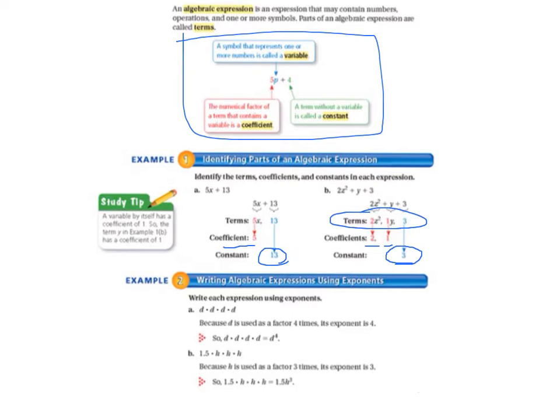Now let's move on to example 2, writing algebraic expressions using exponents. Write each expression using exponents. Because d is used as a factor 4 times, its exponent is 4. So d times d times d times d equals d to the 4th power. So this is just like we do with numbers, only we've got a letter instead. And then we have 1.5 times h times h times h because h is used as a factor 3 times, its exponent is 3. So we have 1.5 times h times h equals 1.5 h to the 3rd power. So 1.5 becomes the coefficient for h.